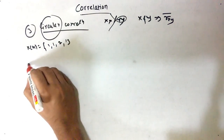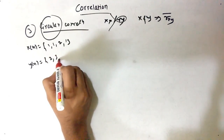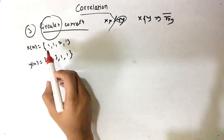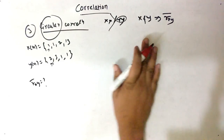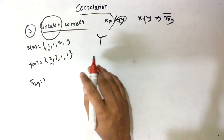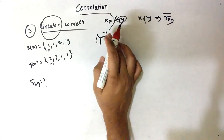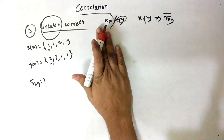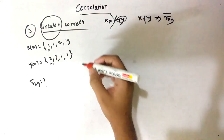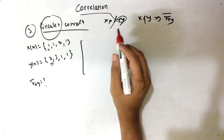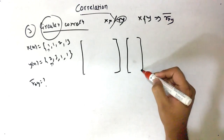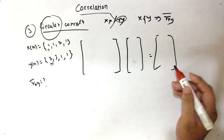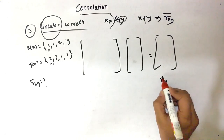So X(n) equals 1, 1, 2, 1, and Y(n) equals 2, 3, 1, 1, and they start at the origin. So now what is circular correlation and how do we find it? We don't follow the same arrow-direction grid form as before. Instead, we follow a matrix form. This matrix multiplied by a column vector will equal our answer matrix — the result R_XY overbar.